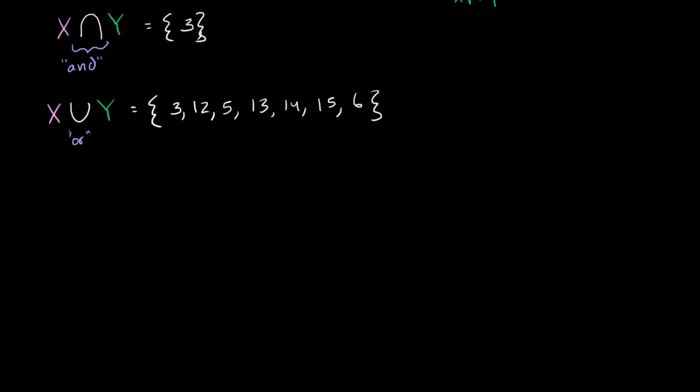Let's do one more example, just so that we make sure we understand intersection and union. So let's say that I have set A. And set A has the numbers 11, 4, 12, and 7 in it. And I have set B. I have set B. And it has the numbers 13, 4, 12, 10, and 3 in it.